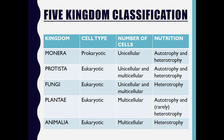The five kingdoms of this classification are Monera, Protista, Fungi, Plantae, and Animalia. As discussed, the classification was done on the basis of cell type, number of cells, and the mode of nutrition.